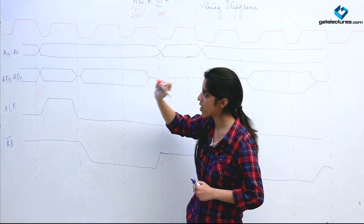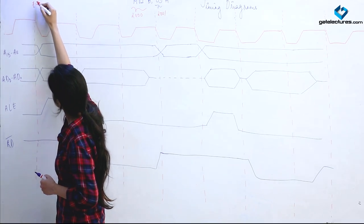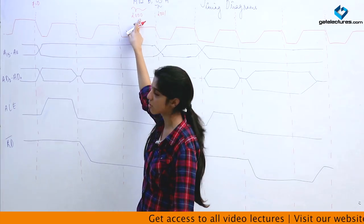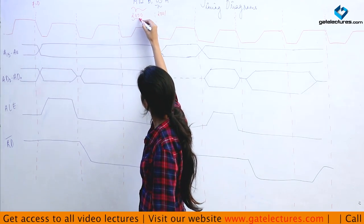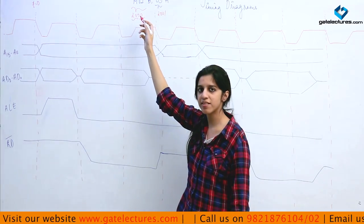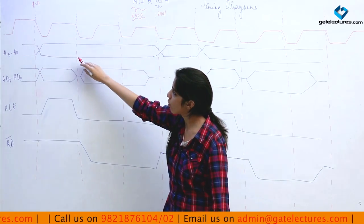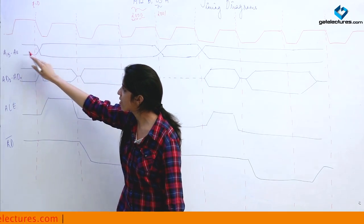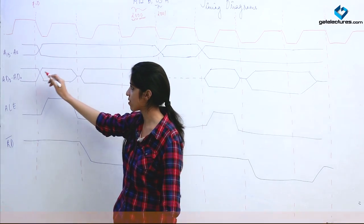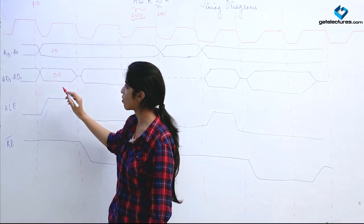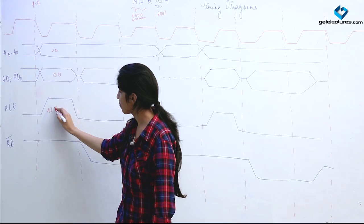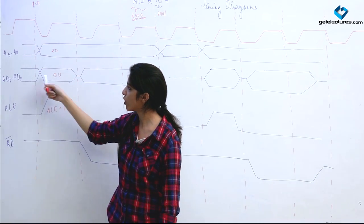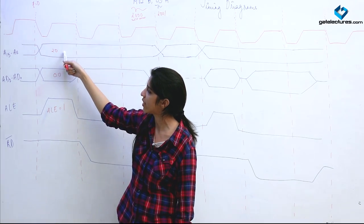Starting from time 0, we set the clock. First, we load the address of the first instruction, which is 2000H. The address is divided into two blocks: the higher bits go into the higher address lines and the lower bits go into the lower address lines. So we put 20H in the higher lines and 00H in the lower lines. Then we enable ALE (Address Latch Enable) so this bus behaves as an address bus, carrying address 2000H.